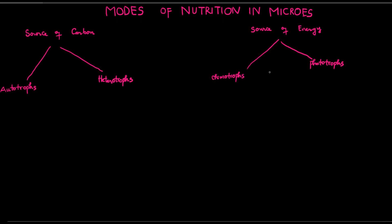This video is about different modes of nutrition in microorganisms. Based on the source of carbon that microorganisms need for their growth, microorganisms can be divided into two groups: autotrophs and heterotrophs.